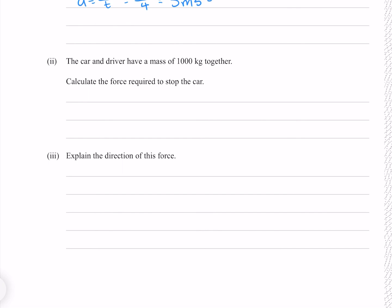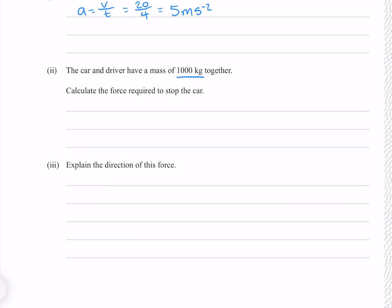The car and driver have a mass of 1000 kilograms together. Calculate the force required to stop the car. We're given the equation that our force is equal to our mass times acceleration. We know the mass is 1000 and we know the acceleration is 5, giving us 5000 newtons.